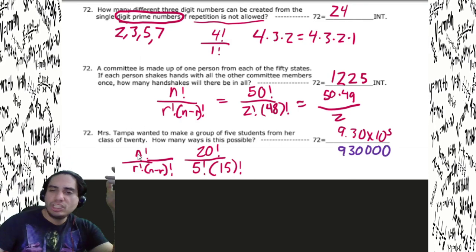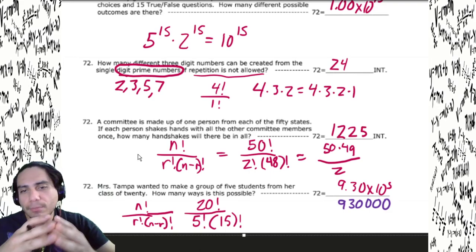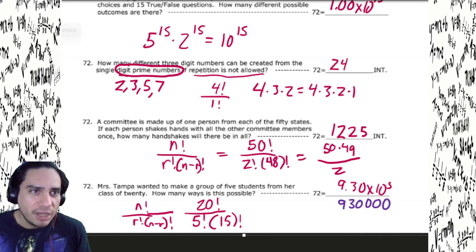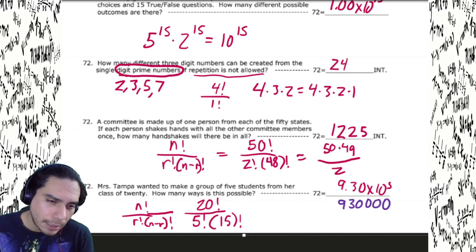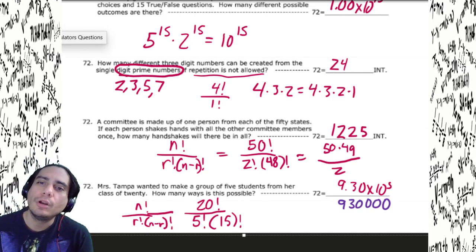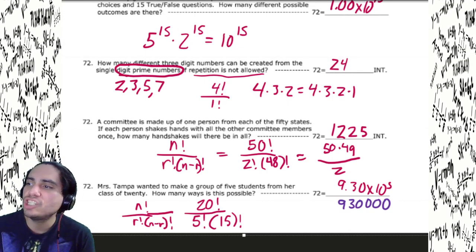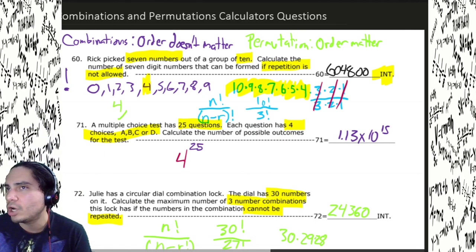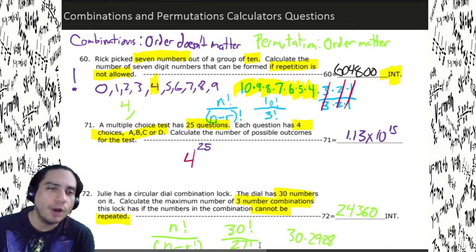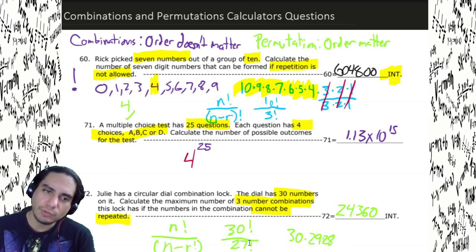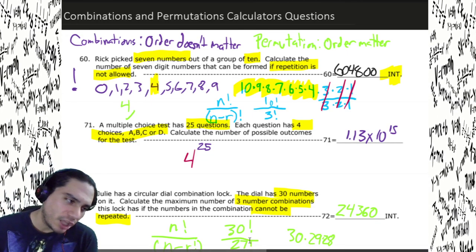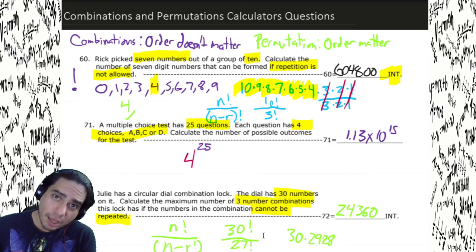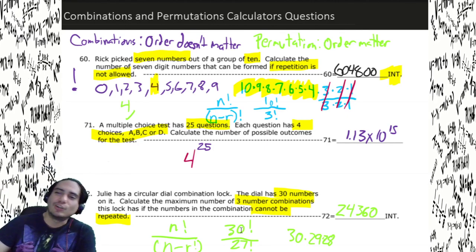All right ladies and gentlemen, we had some good times. We got these combinations and permutations going, and hopefully you've learned something. This is probably something you've never really seen before, but it's not that hard. Remember we're doing calculator questions. Combinations and permutations — that's what we're working with. Hopefully you learned a little something. Hope you have a great Thanksgiving and a great turkey time. Have a great day, ladies and gentlemen.